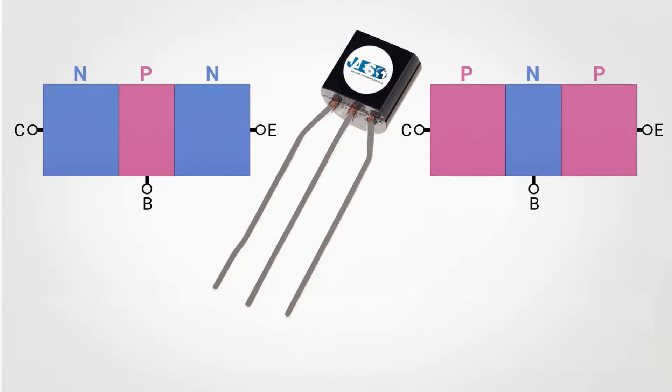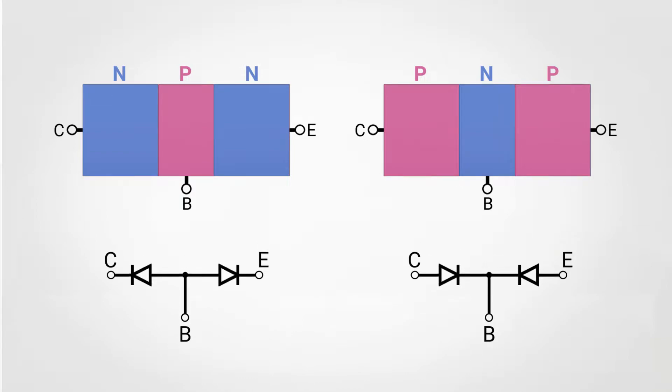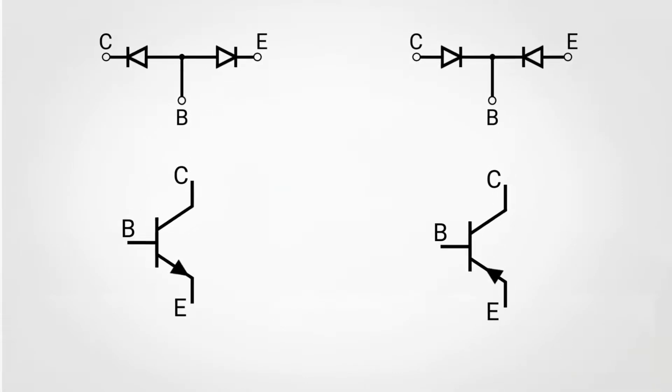This difference is not only related to the use of opposite polarities for the three electrodes - collector, base and emitter - but allows to obtain a symmetrical operation very useful in many circuits.